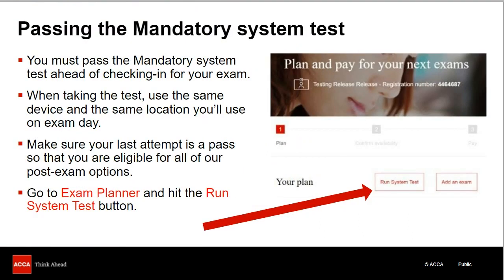Passing the mandatory system test is something all students must do ahead of checking in for their exam. This test will give you an indication as to the suitability of your device and connectivity to run the exam successfully, so it's important to use the same device and location you plan to use on exam day. Passing the test will also mean you are eligible for all of our post-exam options. Your last attempt is used for eligibility purposes, so if you perform the test multiple times, your last result must be a pass. To take the system test, simply go to Exam Planner and select the Run System Test button.